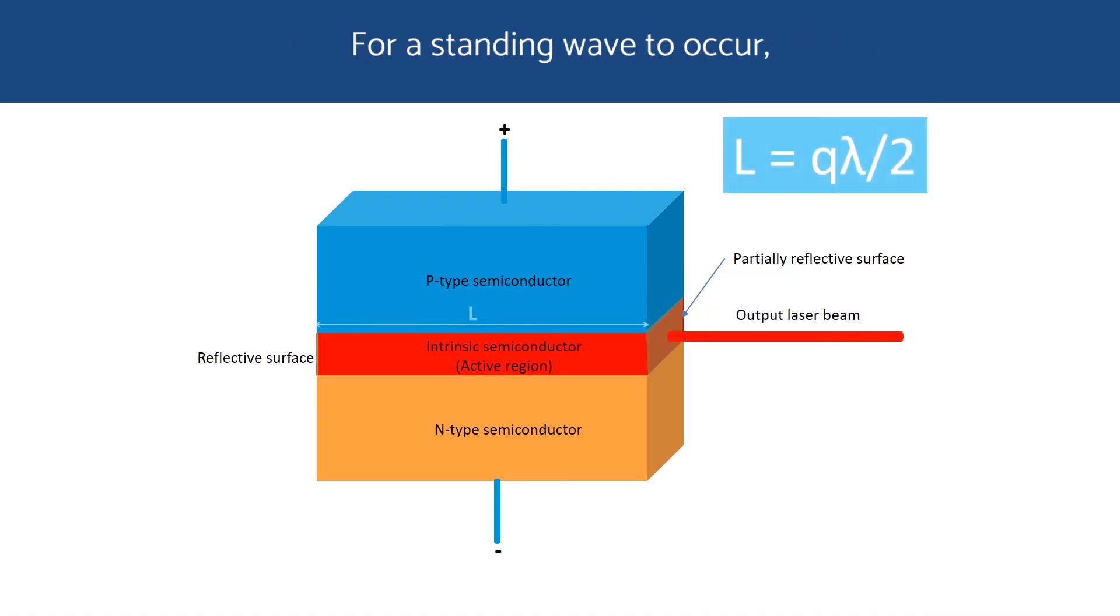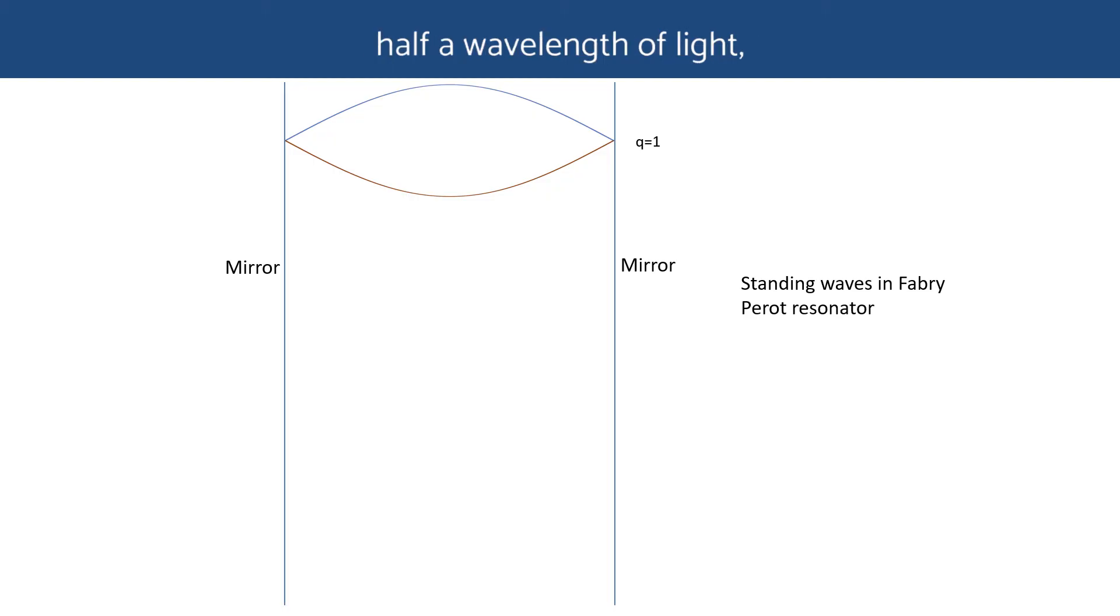For a standing wave to occur, the separation between the surfaces must be an integral multiple of half the wavelength. In other words, L equals Q lambda over 2, where L is the surface separation, Q is an integer, and lambda is the wavelength. When the separation equals half a wavelength of light, you have the first mode number, or Q equals 1. When the separation equals the wavelength of light, you have the second mode number, or Q equals 2.